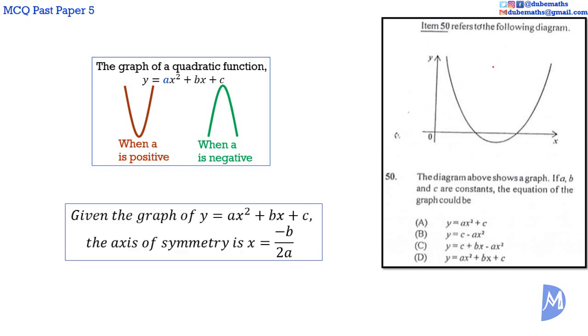Further, the axis of symmetry of the graph is given by X is equal to minus B over 2A. Thus, if B is equal to 0, as with answer A, the axis of symmetry would be X is equal to minus 0 over 2A, which is equal to X is equal to 0, because 0 divided by anything is 0.